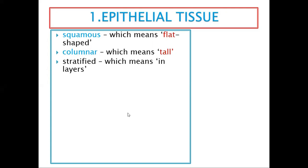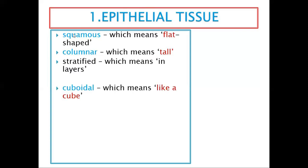Columnar tissue could be stratified, meaning it has different layers, or it could be simple columnar — just one layer with no other layer on top. It's like a house: it could be a double storey or just a simple house. Stratified comes from the word strata, which means a layer. So a stratified tissue has different layers.